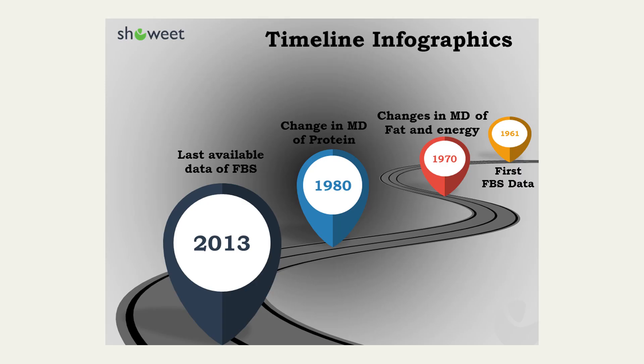In terms of the timeline infographics, this is the first dataset and this is the last dataset. In 1970, changes in fat and energy occurred in the Nepalese diet, and the change in macronutrient distribution of protein occurred in 1980. Thank you very much for your support.